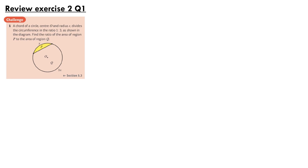Because we know that the chord divides the circumference into the ratio 1 to 3 as shown, we know that the sector formed from the point of intersection of the chord with the circle must have an angle of pi over 2, or 90 degrees. This is a quarter of the circle — x over 4x.